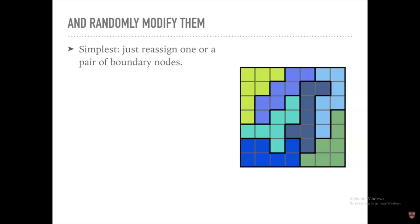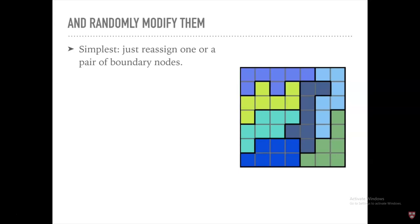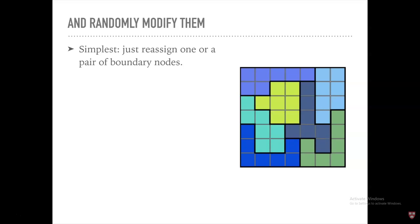We've got some way of starting with districting plans, and here's the protocol: just start modifying them at random. You apply some kind of proposal that tells you how to transform one plan to a different plan, and what you're effectively doing is walking around this space of possibilities.